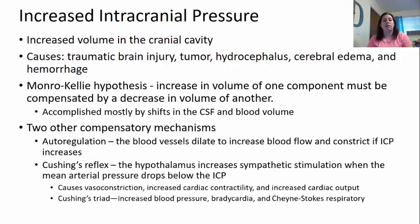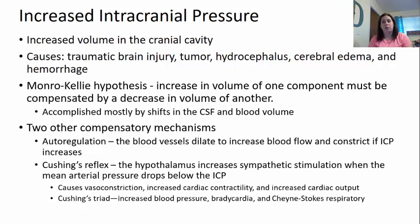The other mechanism is the Cushing reflex. This is where the hypothalamus increases its sympathetic stimulation when the mean arterial pressure drops below the intracranial pressure. This causes vasoconstriction, increased cardiac contractility making the heart contract harder, and increased cardiac output. The Cushing triad — tri meaning three — shows that blood pressure increases, bradycardia will potentially happen, and then what we call Cheyne-Stokes respiration: really fast deep breathing that will slowly start to slow down eventually into apnea.